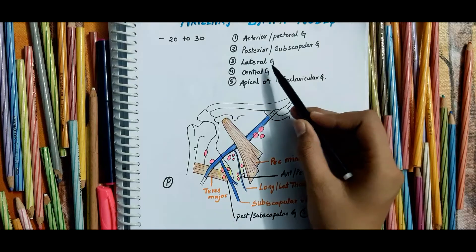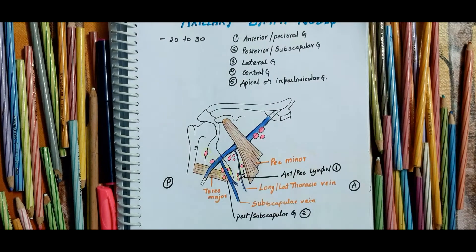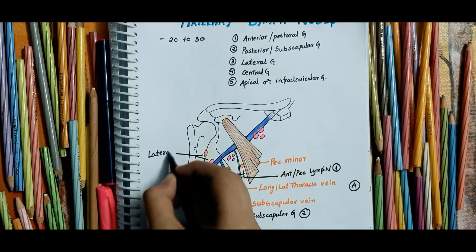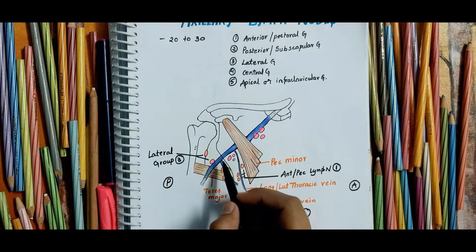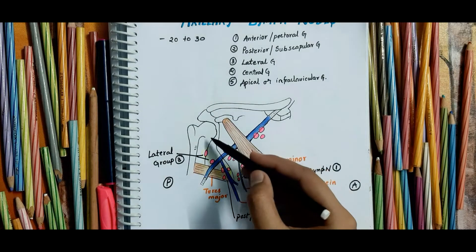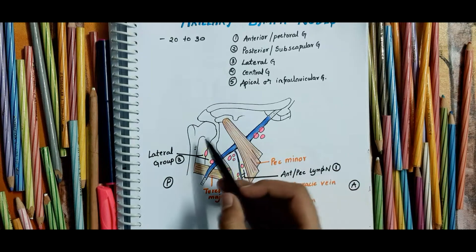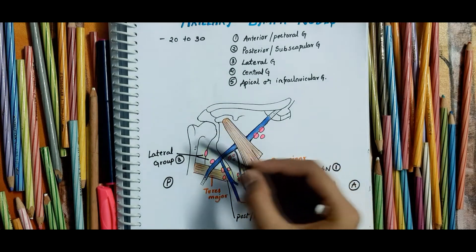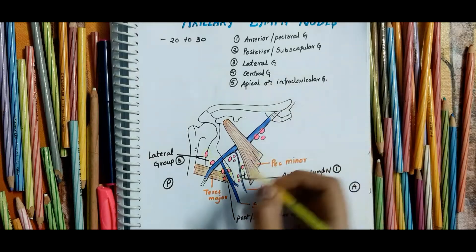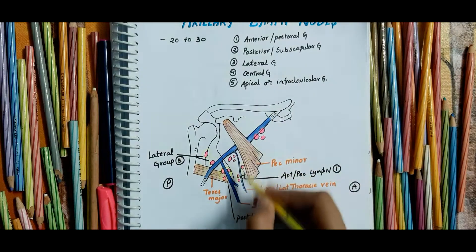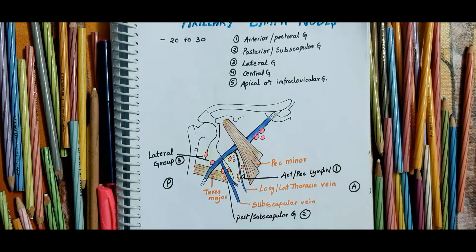Now coming to the third variety, the lateral group of lymph nodes. They lie along the upper part of the humerus in relation to the axillary vein. They drain lymph from the upper limb.